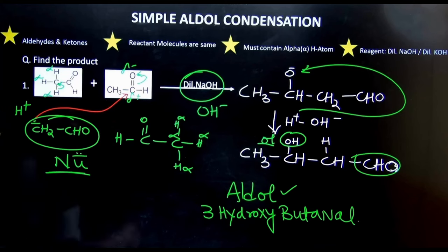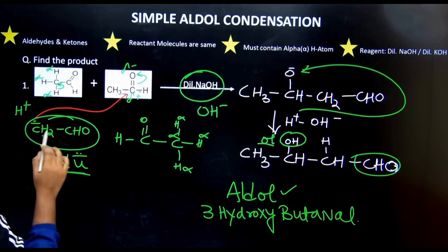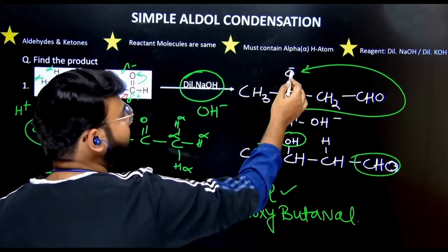Now it is a simple addition. So what you have to do? CH3, then you have CH, then CH2 and CHO. What happened to the oxygen? Oxygen has taken the pi electron. So that is why O negative.